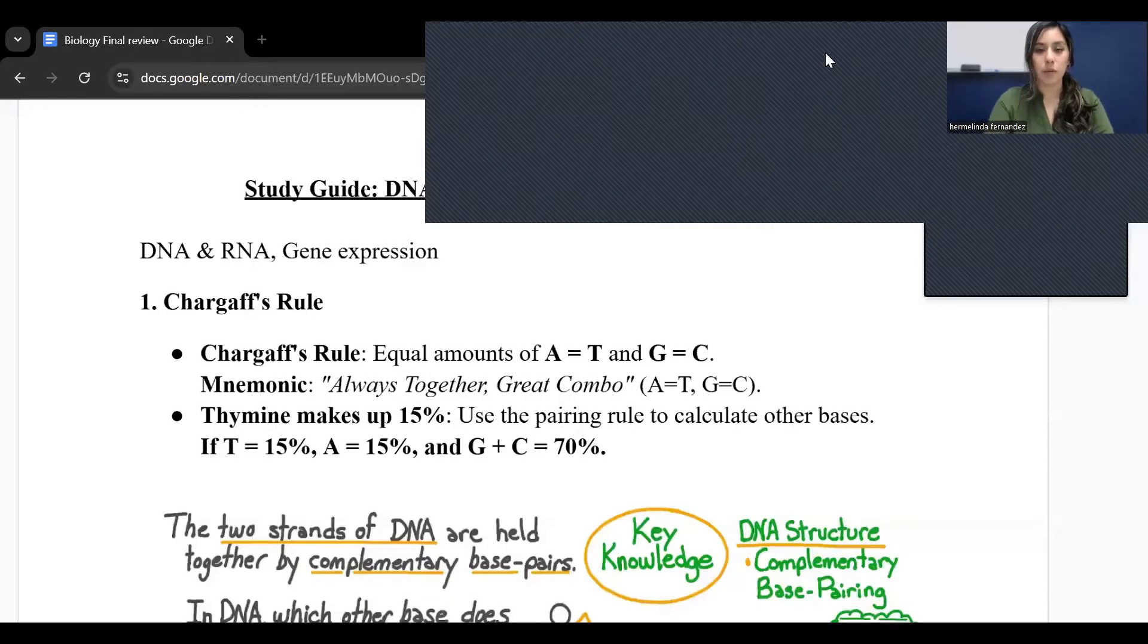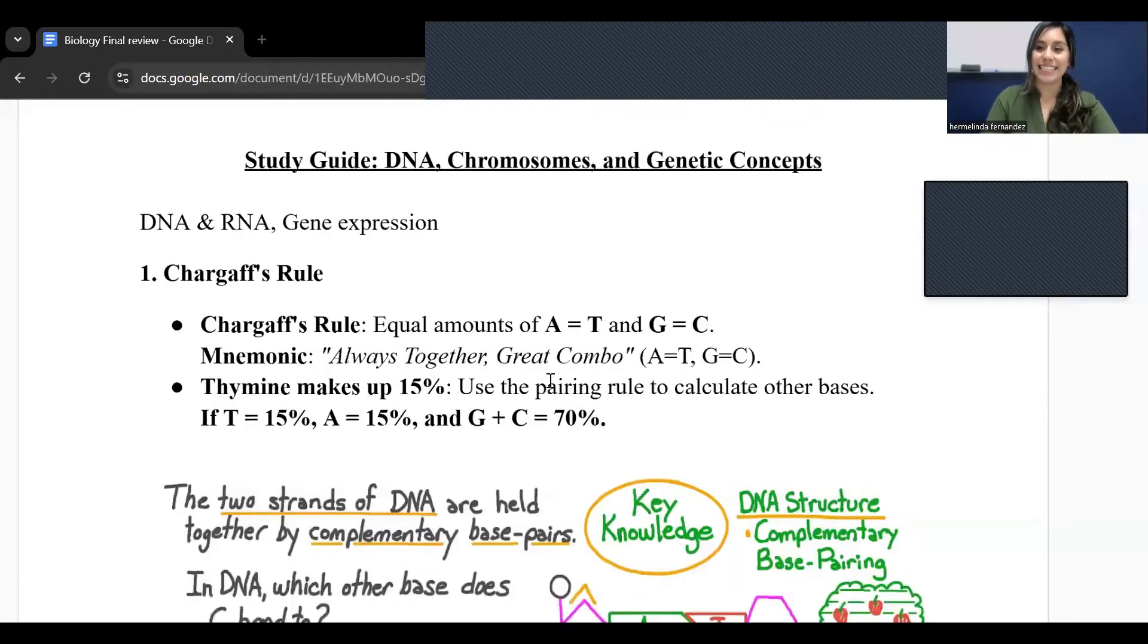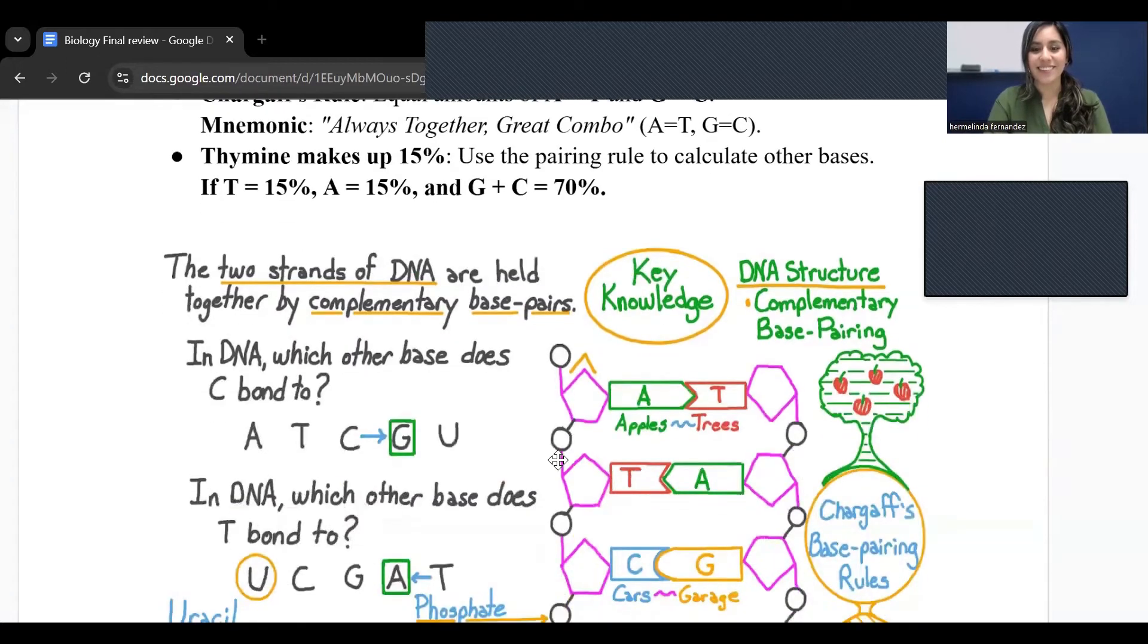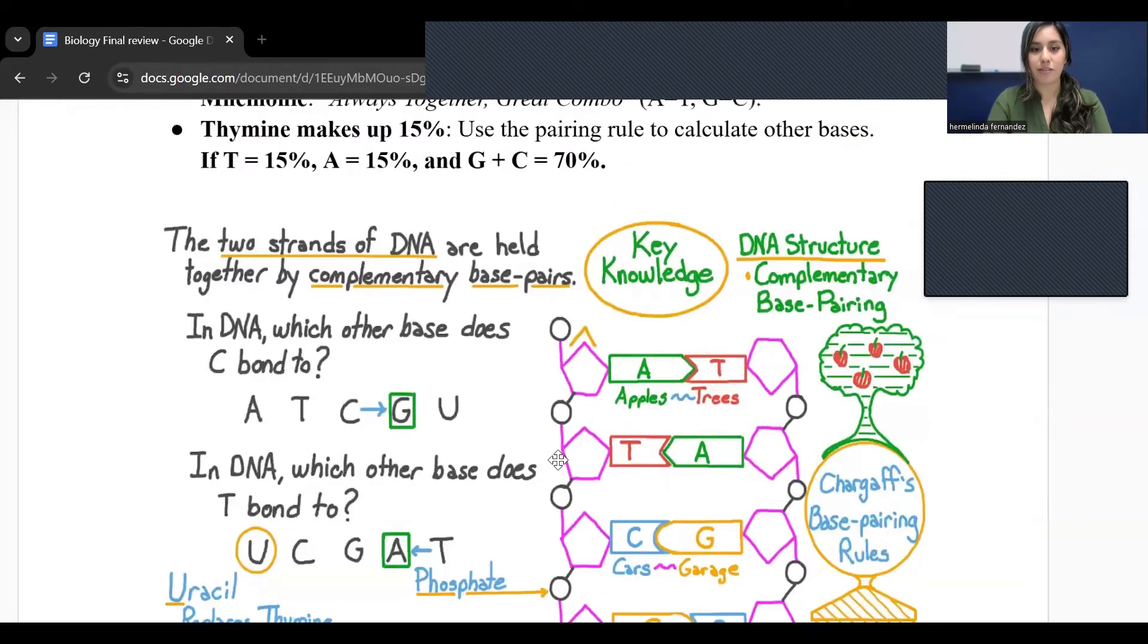The first concept that we are going to go over is DNA and RNA, so gene expression. The first thing that we need to know are the Chargaff rules. The Chargaff rules are where adenine and thymine are paired together and guanine and cytosine are also paired together. A good memory trick to remember this would be 'Always Together Great Combo' or 'Apples to Trees and Cars and Garages.'